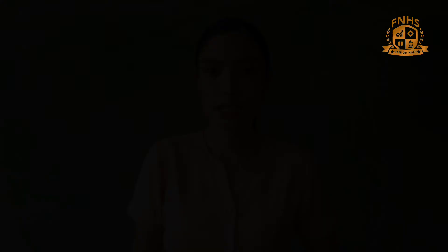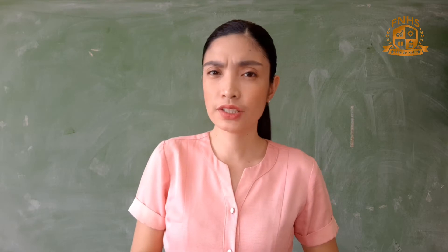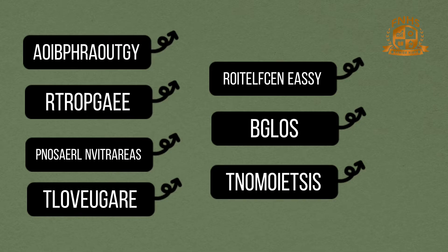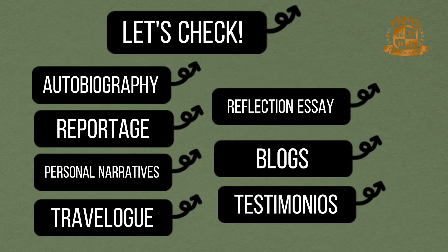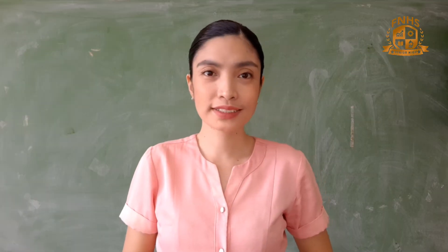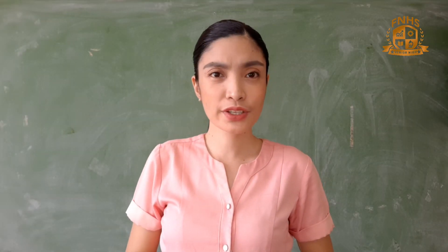What can you say about the pictures? Have you ever seen or read any of them? Here are some jumbled letters. All you have to do is arrange the letters to identify the word being described. How well did you do in our activity? Are those terms familiar to you?